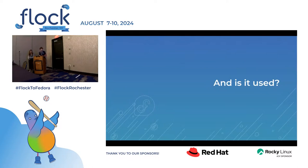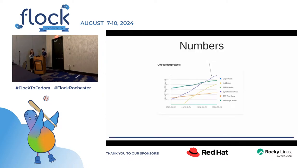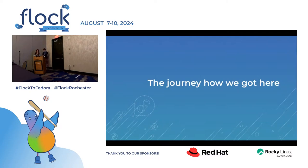Is all of this actually used? We are quite happy to say it is. Especially in the last year we have seen quite a lot of growth. In context of this presentation, I'd highlight the purple line, which represents the sync release runs. You can see that a year ago there were maybe around 100 projects using this automation, and now we are somewhere around 500. So what happened? What have we changed and implemented? Let's look at the journey especially from the last year.